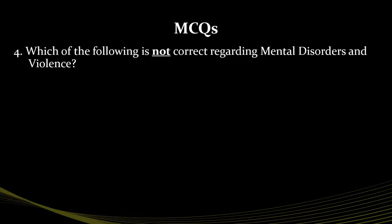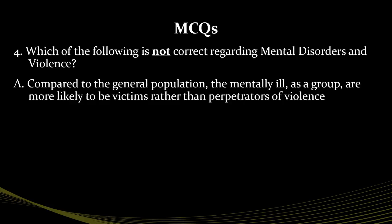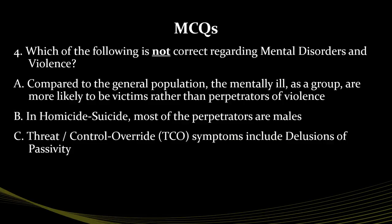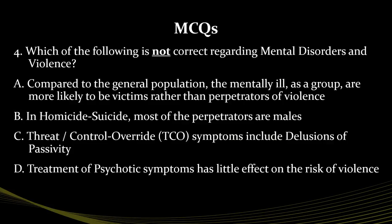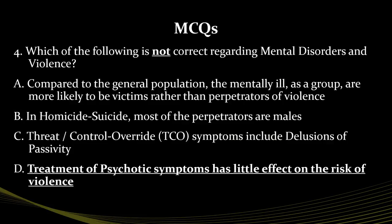Question 4: Which of the following is not correct regarding mental disorders and violence? The correct answer is option D. Option D is not correct regarding mental disorders and violence, as treatment significantly reduces the risk of violence. So the other three options are correct.